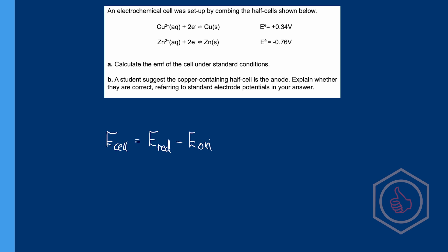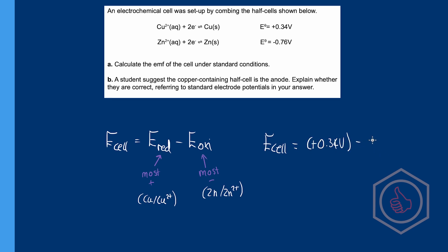The more positive the standard electrode potential, the more likely reduction is to occur. The more negative the standard electrode potential, the more likely oxidation is to occur. So E-reduction is the most positive, and E-oxidation is the most negative. In this situation, copper is the most positive and zinc is the most negative. So E-cell = +0.34 V − (−0.76 V), which gives us a final value of positive 1.10 volts.